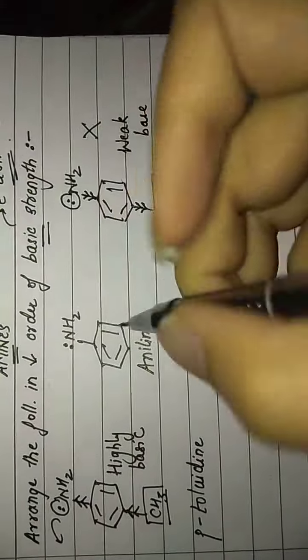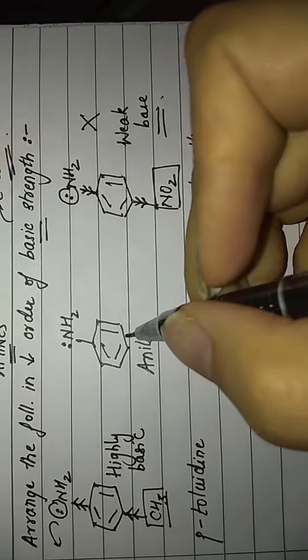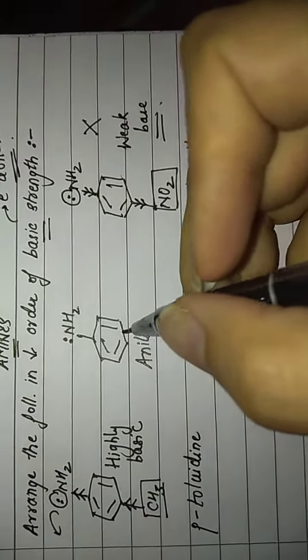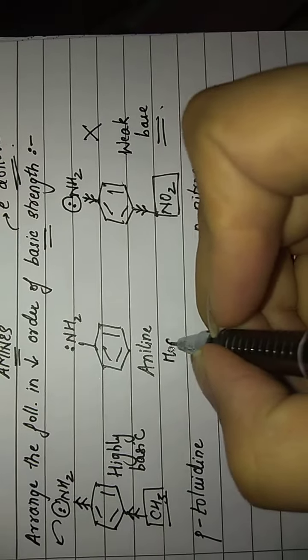Now this molecule of aniline, it neither has an electron donating group attached to it nor an electron withdrawing group attached to it. So hence we would call this as moderately basic.